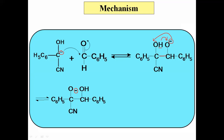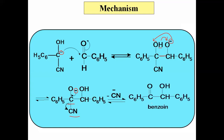We get another intermediate where oxygen has a negative charge and there is an OH group present. The electron pair on the negatively charged oxygen forms a pi bond between carbon and oxygen. Simultaneously, the bond between carbon and CN undergoes breaking, and the electron pair goes towards CN, resulting in loss of CN⁻. We get the product: C₆H₅–C(=O)–CHOH–C₆H₅, which is nothing but benzoin. That compound has two functional groups — one is a carbonyl group and the second is an alcoholic OH group. That compound is called benzoin, and the reaction is called benzoin condensation. This is the complete mechanism of benzoin condensation.